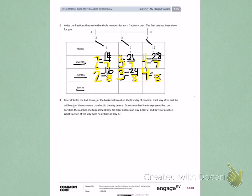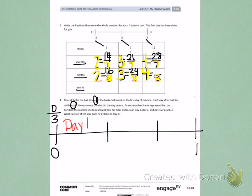So in my problem, I see that he dribbles 1 third of the way the first day. And every day after that, he dribbles 1 third of the way more. So I'm going to create a number line where I partition it into thirds. Because he is dribbling 1 third of the way every day. So before he starts practice, he hasn't dribbled at all. On day 1, he is able to dribble the ball 1 third of the way down the court.